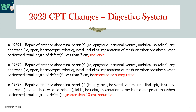Looking at code 49591: repair of anterior abdominal hernia, initial, including implantation of mesh or other prosthesis when performed, total length of defect less than 3 cm, which is reducible. When encountering this code set, you have to note the cm length of the defect and the type of hernia — whether it is incarcerated, strangulated, or reducible.